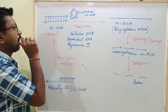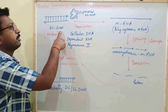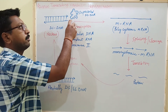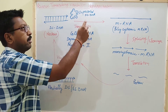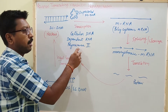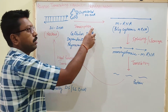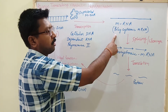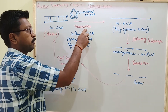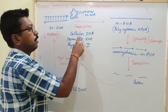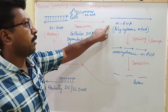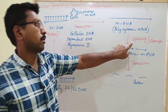This whole procedure takes place in the nucleus of the host cell. In the nucleus, the double-stranded DNA is in supercoiled form, and this supercoiled double-stranded DNA, using cellular DNA-dependent RNA polymerase II, is converted into polycistronic mRNA. In the procedure of transcription, cellular DNA-dependent RNA polymerase II is used.